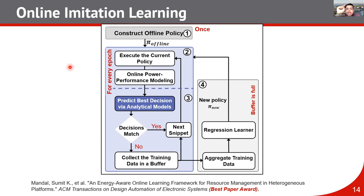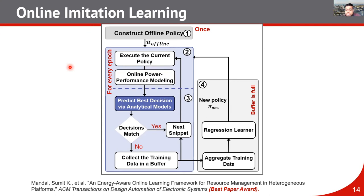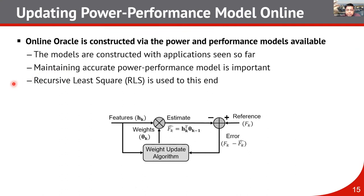One big challenge is how to get the optimal decision on-chip, because at that time we don't have access to all other configurations' power and energy consumption. One possible solution is to have a power-performance model that estimates power and performance for all configurations. But an offline power-performance model trained on known workloads may not generalize well to new workloads, so we update the power-performance model on-chip using a recursive least squares approach.